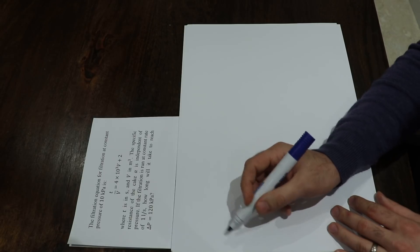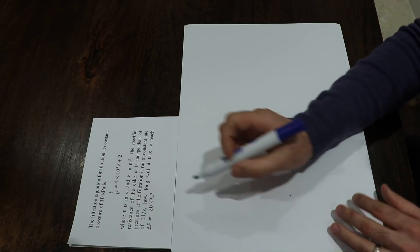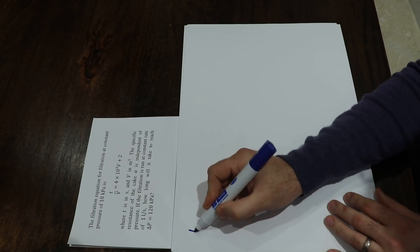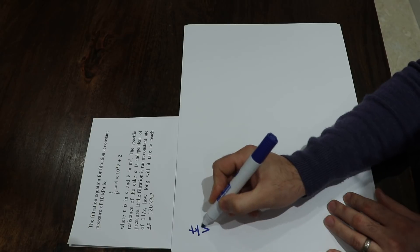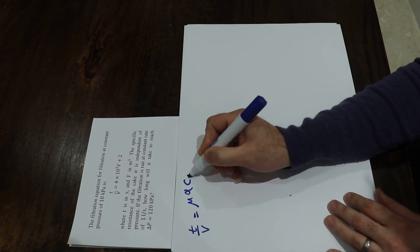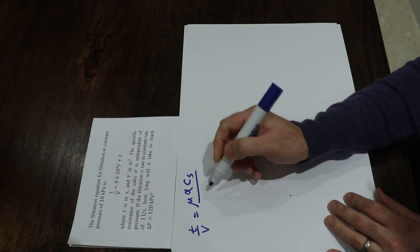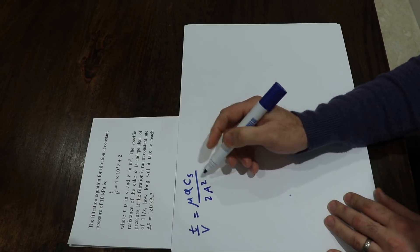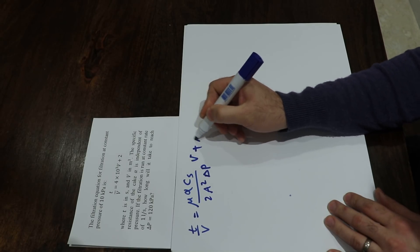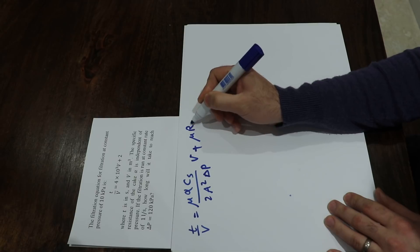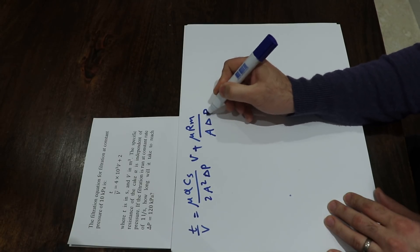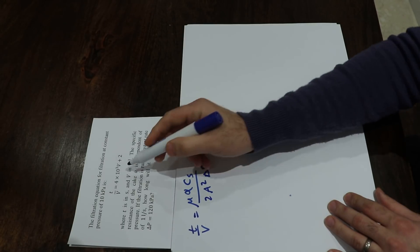First, you need to write the filtration equation for constant pressure, which is: t divided by V equals mu alpha cs divided by 2 a² delta P, times V, plus mu rm divided by a delta P.